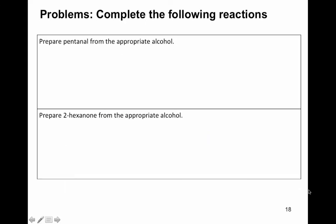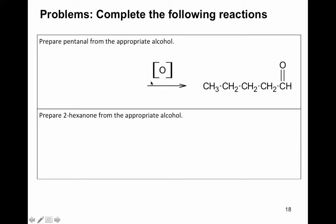Practice problems: complete the following reactions. First, prepare pentanal from the appropriate alcohol. Second, prepare 2-hexanone from the appropriate alcohol. For these word problems, put the product in first. Pentanal has five carbons with an aldehyde. Since it must be prepared from an alcohol by oxidation, place the bracket [O] over the arrow and draw the five-carbon aldehyde as your product.